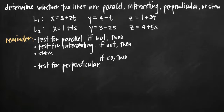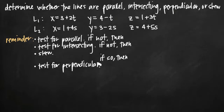Perpendicular is kind of an offshoot of intersecting. Think of parallel, intersecting, and skew as the three main options. If the lines are intersecting, they may or may not be perpendicular — they could intersect at some angle other than 90 degrees. So if you conclude the lines are intersecting, you can then move on to test for perpendicular. But right now we're just going to start with parallel, then intersecting, then skew.